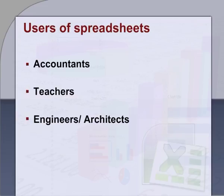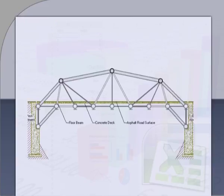Third, engineers or architects. Engineers need to perform thousands of calculations when designing bridges, buildings, etc. They need to make sure that bridges will be able to support themselves and will not collapse under the weight of traffic or force of strong winds. They need to work out how deep the foundation of a house needs to be in order to support the walls and roof. For these types of tasks, they may use spreadsheets.